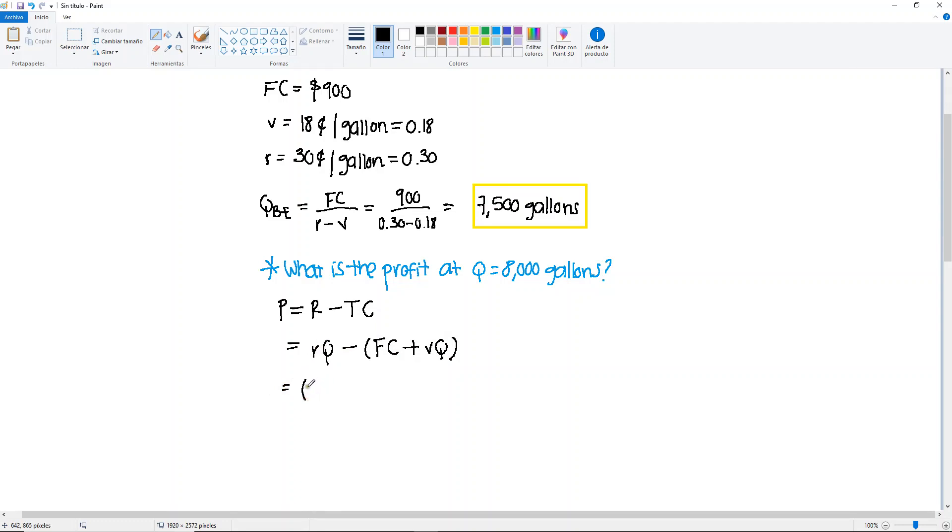So we have little r, 0.30 times the Q that's given here, minus fixed cost was given, 900, plus 0.18 times again the Q that's been given to us in that question. And the answer will be $60.